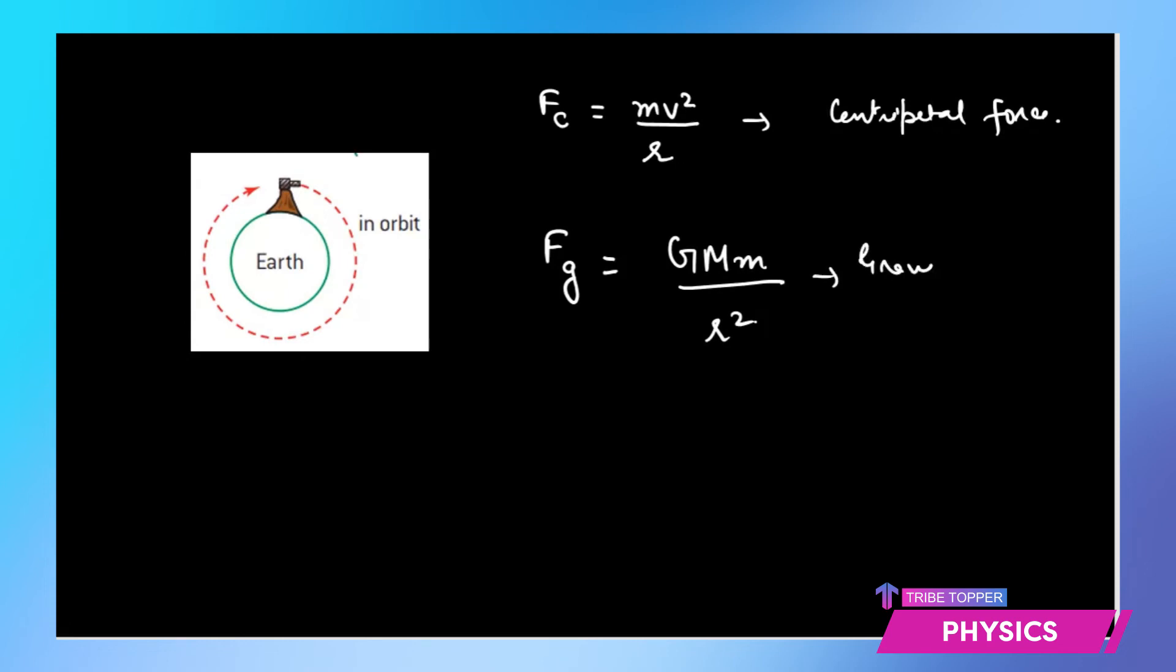So this is the gravitational force which acts as the source of the centripetal force. And since it is providing the centripetal force, we will equate the two. That means gravitational force is the one which is giving you the centripetal force. So Fg equals Fc, which means GMm by r² equals mv² by r.